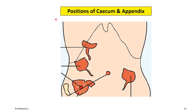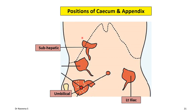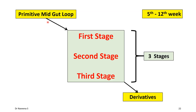It is worthwhile to note the positions of the cecum and appendix during midgut rotation. Initially they lie at the left iliac region, then move to the umbilical region, then to the sub-hepatic region by the end of the second stage. In the third stage, they descend through the right lumbar region to their definitive position in the right iliac region. So, the primitive midgut loop undergoes three successive stages during the 5th to 12th week, showing herniation, reduction, rotation, and descent, giving rise to its definitive derivatives.